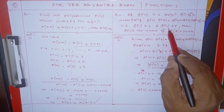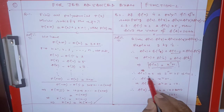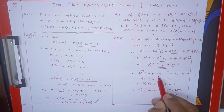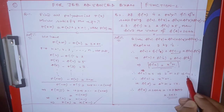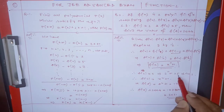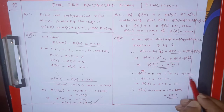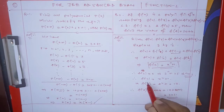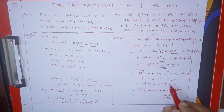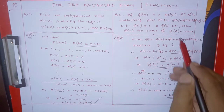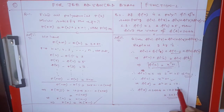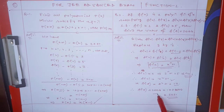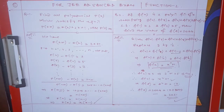Using f(2) = 5: 2ⁿ + 1 = 5, so 2ⁿ = 4, giving n = 2. Therefore f(x) = x² + 1. Now f(4) = 16 + 1 = 17. So f(4) + 2004 = 17 + 2004 = 2021.